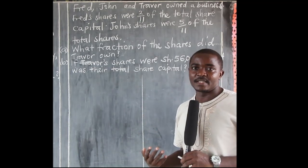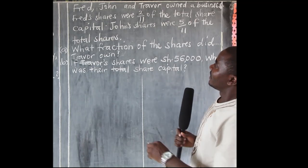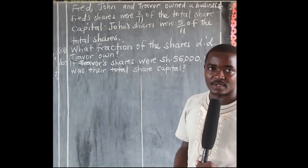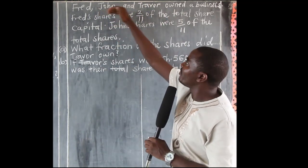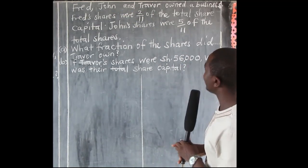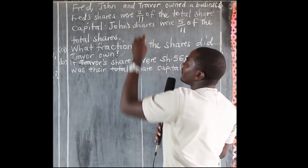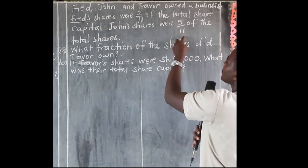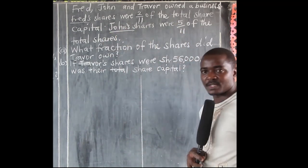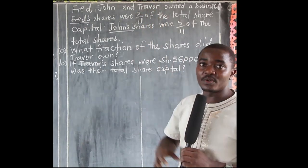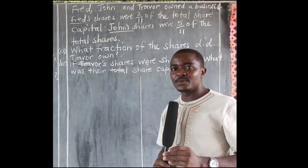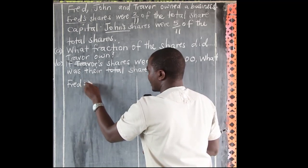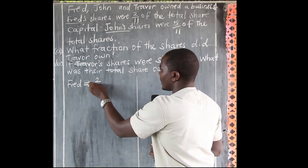Compare your answer with mine and let's move together. To get Trevor's fraction, given that Fred's share is 2 out of 11 and John's share is 5 out of 11, both are known. What remains is Trevor's fraction, which we don't know. So pay attention to this: the fraction for Fred is 2 out of 11.